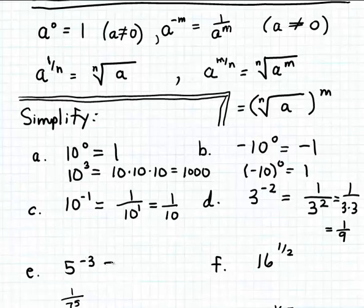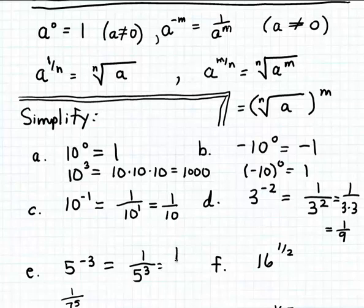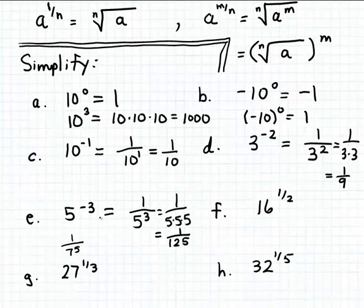Finally, how do we simplify 5 to the minus three power? We take the reciprocal of the base and change the negative exponent to a positive one. So 5 to the minus three equals one over 5 to the third power, or one over 5 cubed. Five cubed means five times five times five, and five times five times five is 125. So 5 to the minus three simplifies to one over 125.